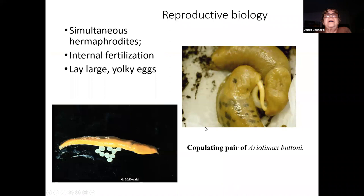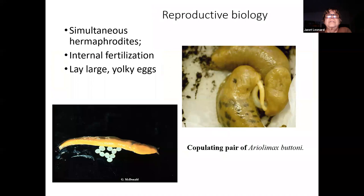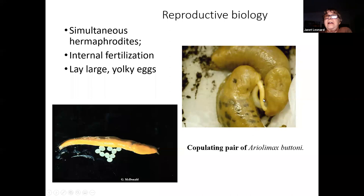Moving into their reproductive biology, which has been my particular focus: like all of the land snails, they're simultaneous hermaphrodites. That is, each individual produces sperm and eggs and functions sexually as both male and female at the same time. They have internal fertilization — that means they copulate just like mammals do — and they lay large yolky eggs. Here's an Areolimax dolichophallus with its eggs. Here we have a copulating pair of another species, Areolimax buttoni. You can see each individual has their genitalia in the normal position for a gastropod at the right side of the head. You can see the two penises here connecting the pair.